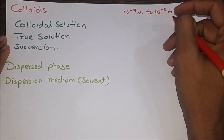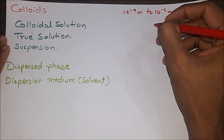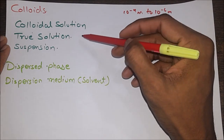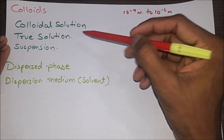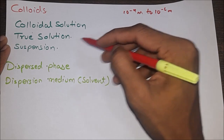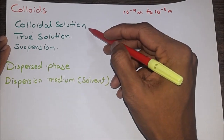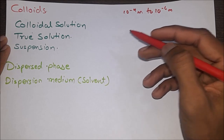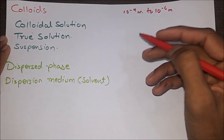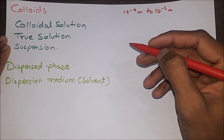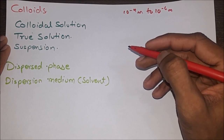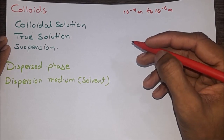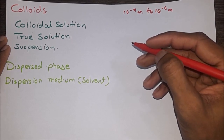The substance whose size is between 10⁻⁹ m to 10⁻⁶ m is said to be in the colloidal state. There are three types of mixtures: colloidal solution, true solution, and suspension. A colloidal solution is a heterogeneous mixture whose particle size is between 10⁻⁹ m to 10⁻⁶ m. The colloidal solution is translucent and turbid. Particles in a given dispersion all carry either positive or negative charge and are visible under an ultra microscope. Example: starch solution.